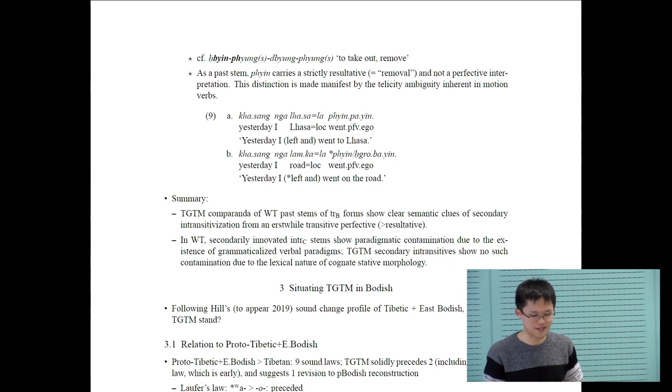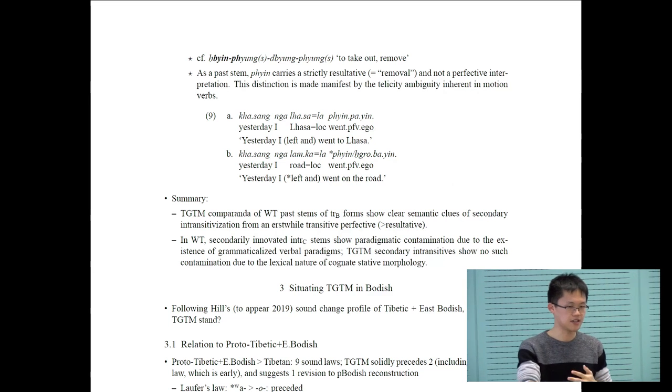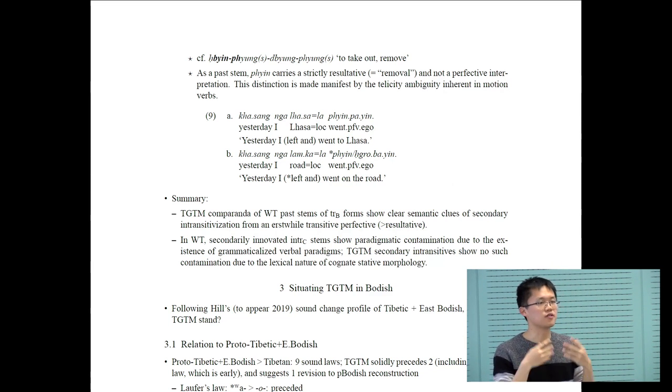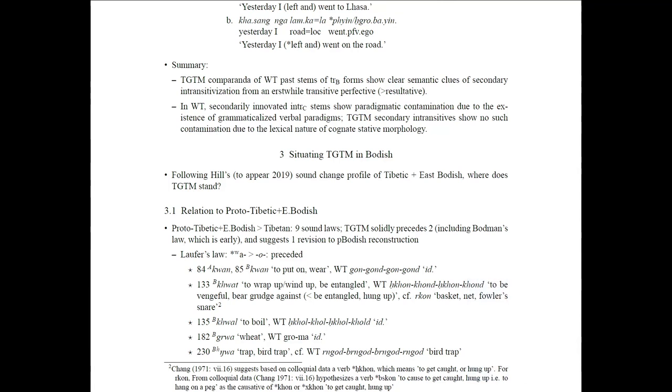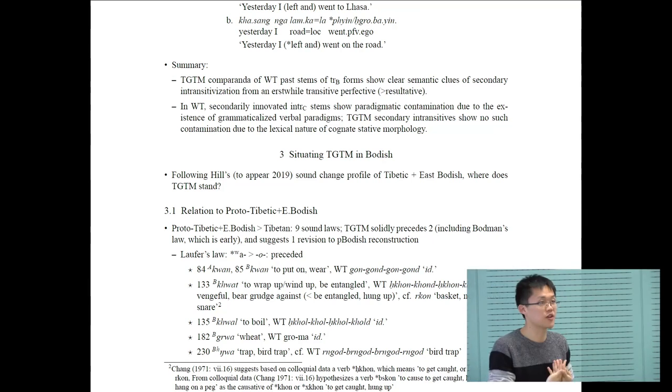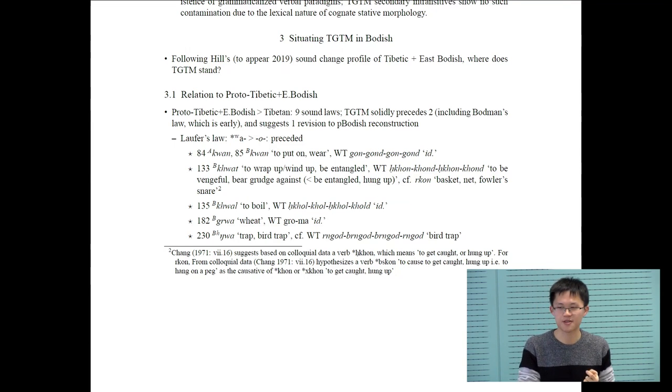I'm going to skip part three because I'm out of time, but basically, in part three, I show through an examination of sound changes that have been proposed recently for Tibetan and East Bodish that TGTM languages precede the splitting off between Tibetan and East Bodish. The original impression is right that West Bodish TGTM is an earlier split off. I propose a shared innovation exclusively among TGTM languages that define them as a group in a full New Grammarian sense. With that, I'll close. Thanks.